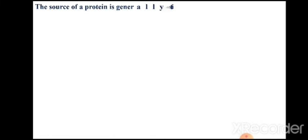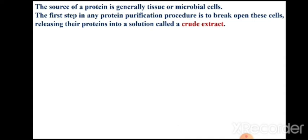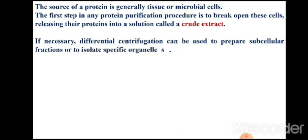Understanding specific activity is very important in order to understand the process of purification of enzyme, in this case amylase. The source of protein is generally tissue or microbial cells. In this practical we will be using an amylase preparation — the amylase is produced and is present in the supernatant after the cells are separated. Since amylase is an extracellular enzyme, there is no need to break open the cells, and this preparation will be called the crude extract, which is ready for purification.